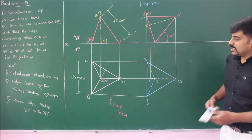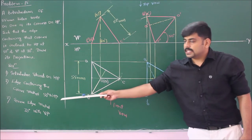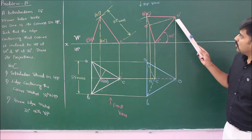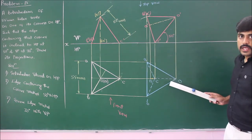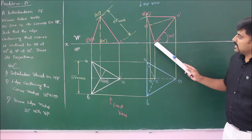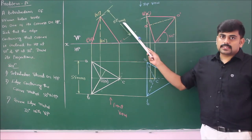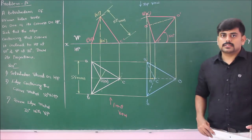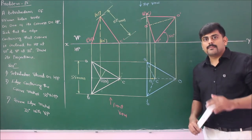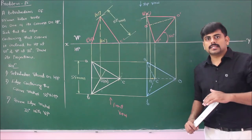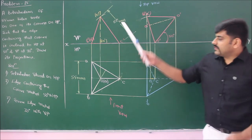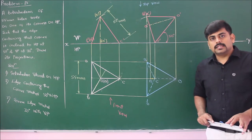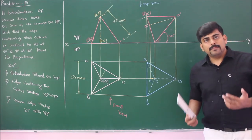In the third position, the edge containing the resting corner must be inclined to VP at 30 degrees. The edge is C to O. The true length of C-prime O-prime is 55 mm, but the apparent length C to O in the top view is less than 55 mm. Since I have an apparent length, I must consider the apparent angle — the beta angle. For 55 mm the true inclination is 30 degrees to VP; I need to find the apparent inclination for the shorter apparent length.